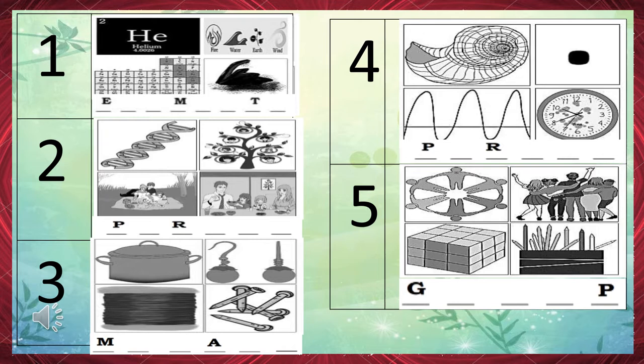Number 3: The answer is metals. Number 4: The answer is period. Number 5: The answer is group. Hope you've got all correct answers.